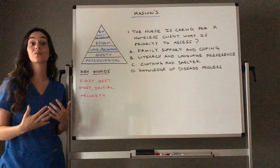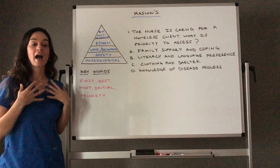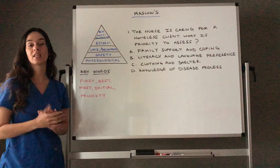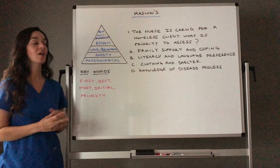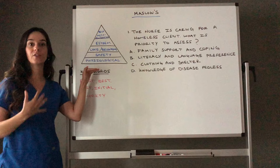Love and belonging is the need to maintain relationships, whether with family, loved ones, or friends. Self-esteem is how we view ourselves and how we perceive that others value us. Self-actualization, at the top of the pyramid, is the need to reach one's full potential — we are constantly striving for it because we are constantly striving to reach our potential.